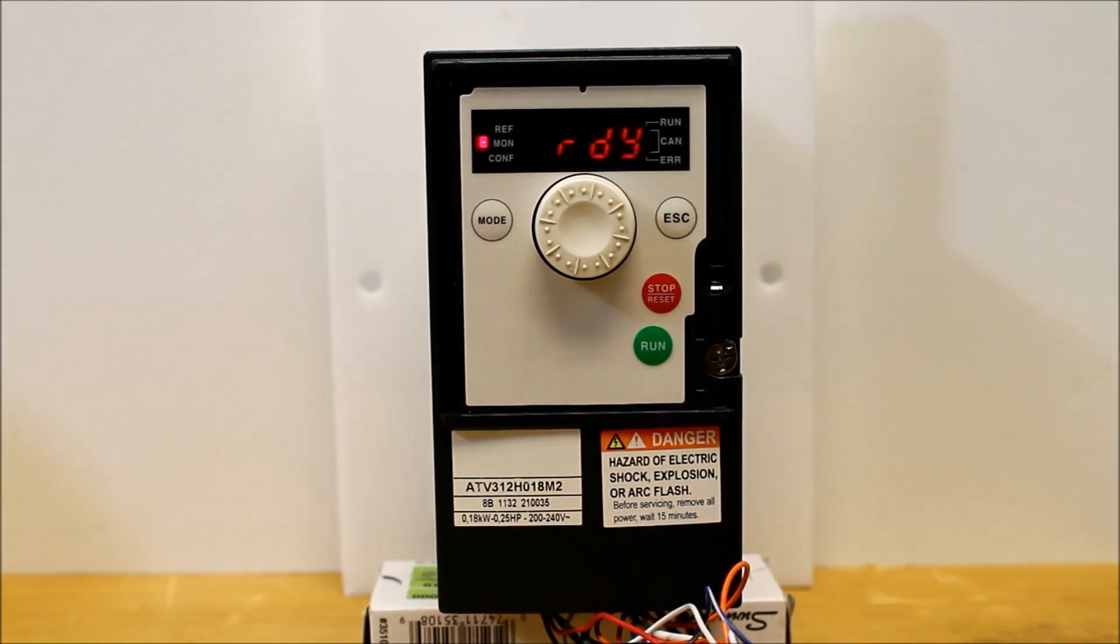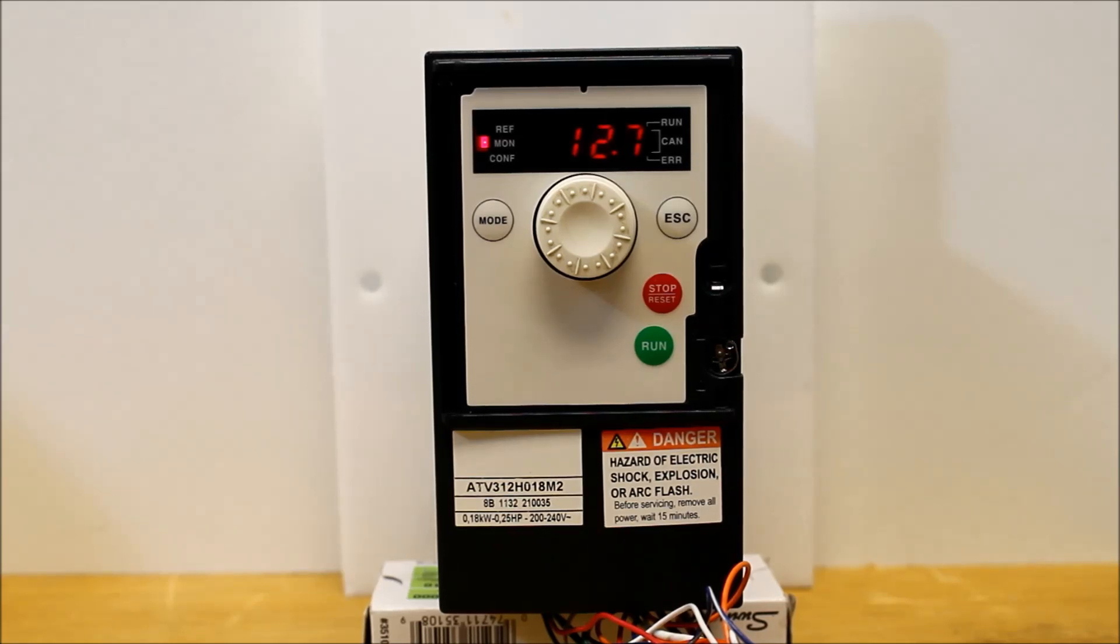Again, LI3 right now is assigned as a plus and LI4 is minus. You toggle your run command, you enable LI3, and you let go. You can see it's ramping up to whatever you left it at. Same thing with minus. You enable LI4, you let go, and it stops wherever you left it. This is how you program the 312 with a plus and minus speed functionality.